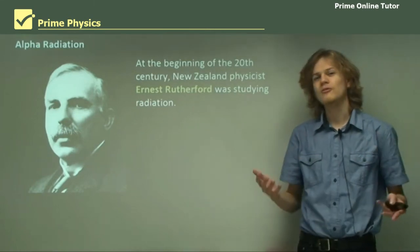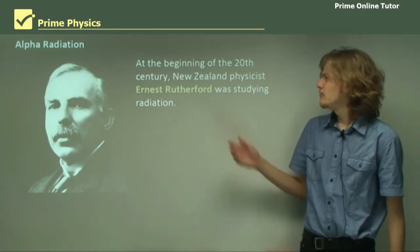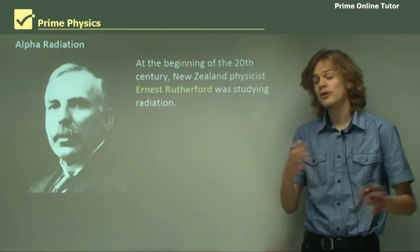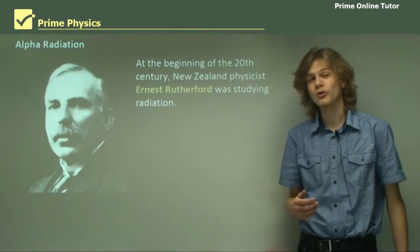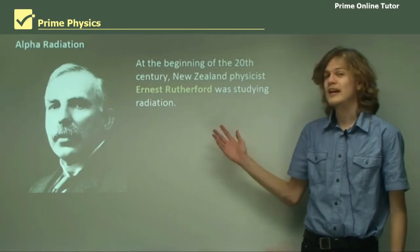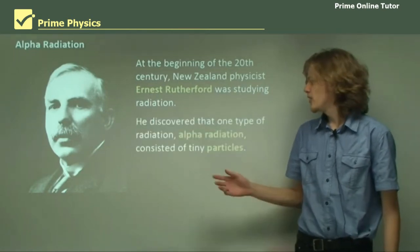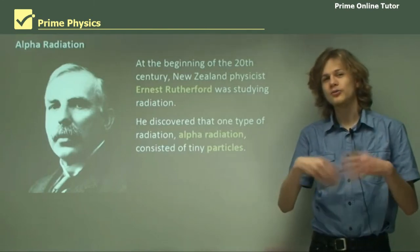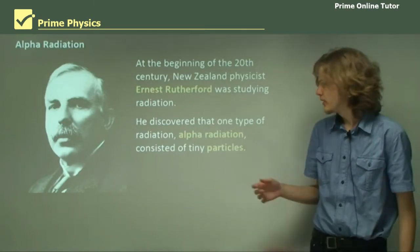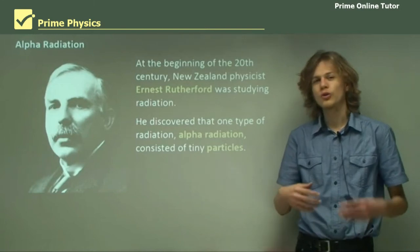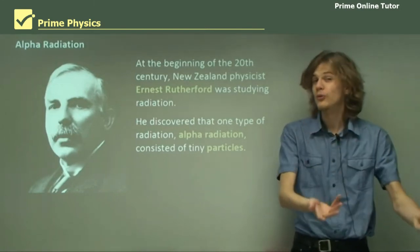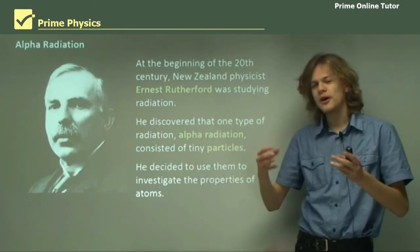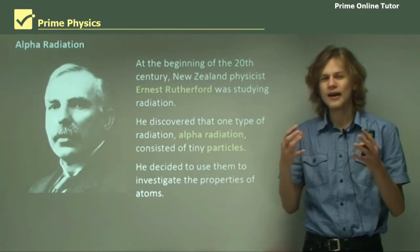First, a bit about alpha radiation. At the beginning of the 20th century, this fellow here, a New Zealander named Ernest Rutherford, who you might recognize from the New Zealand $100 note, was studying radiation. He discovered that one type of radiation called alpha radiation consisted of lots of little particles. So, he called those alpha particles. He decided to use these alpha particles to investigate the properties of atoms.